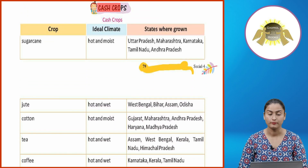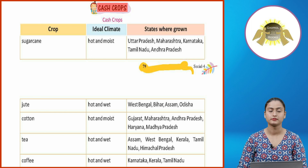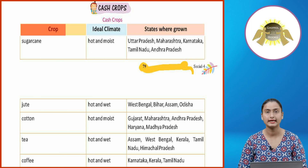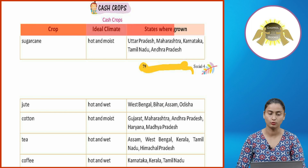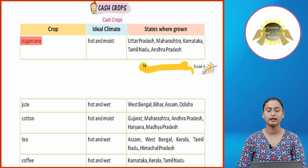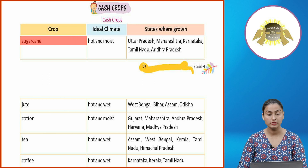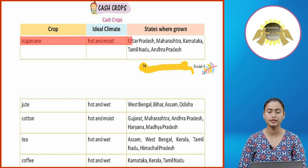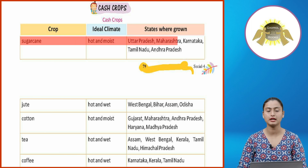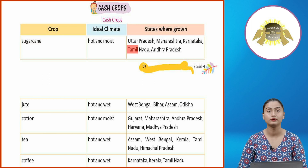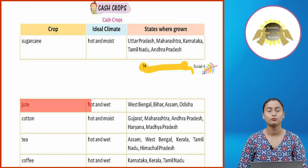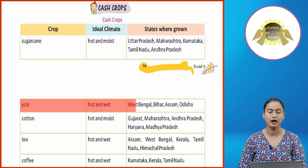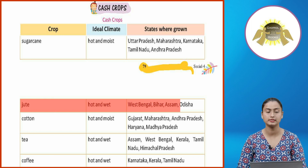Cash crops — the table shows crop, ideal climate, and states where grown. Sugarcane grows in a hot and moist climate in Uttar Pradesh, Maharashtra, Karnataka, Tamil Nadu, and Andhra Pradesh. Jute grows in hot and wet conditions in West Bengal, Bihar, Assam, and Odisha.